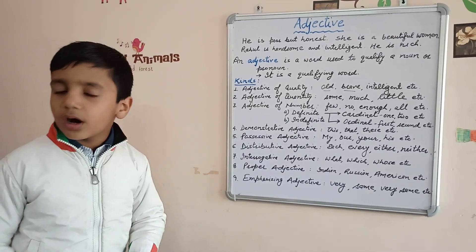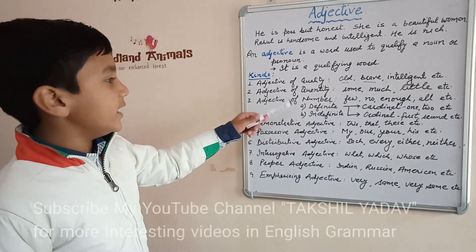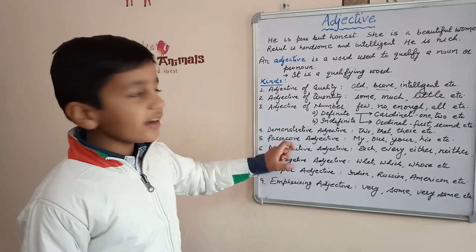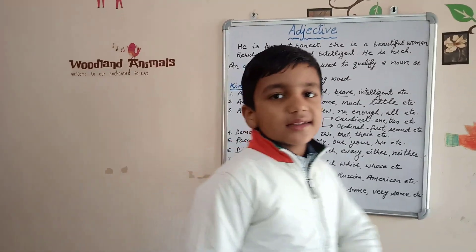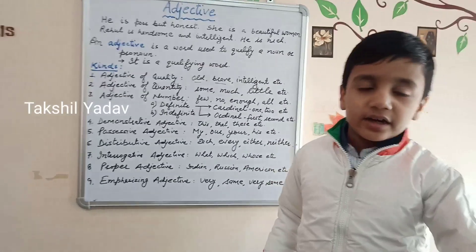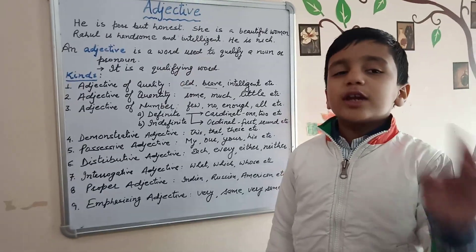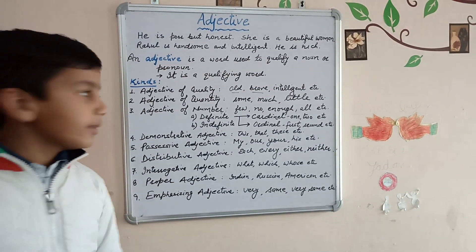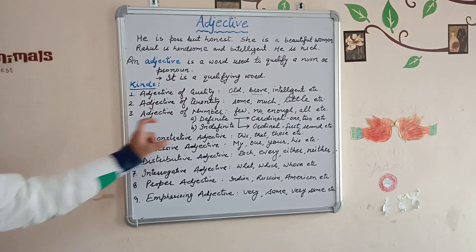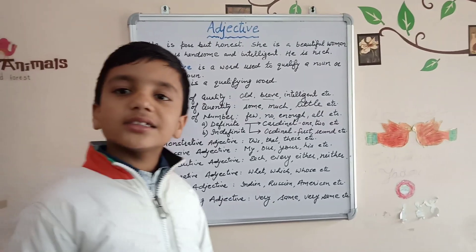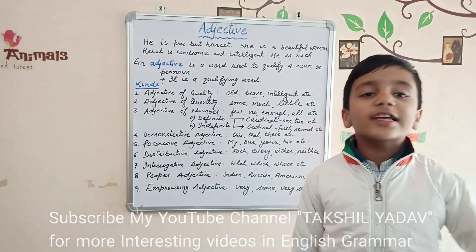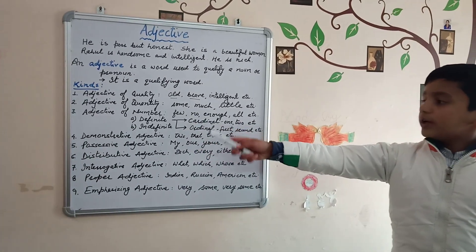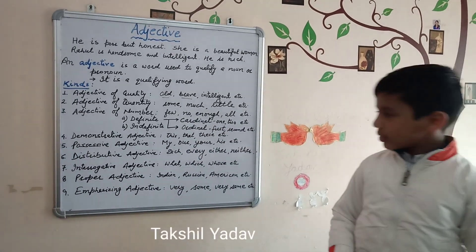Adjectives of number are of two types: definite adjective of number and indefinite adjective of number. Definite adjective of number tells us the definite number — for example: one, two, fifty, fifth. And indefinite adjectives of number do not tell us the fixed or exact quantity — for example: few, no, enough, all.